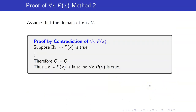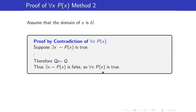Sometimes we use proof by contradiction to show that 'for all x, P(x)' is true. When we want to prove 'for all x, P(x)' by contradiction, we suppose that its negation is true. The negation is: there exists an x such that not P(x) is true. We then want to obtain a contradiction — some statement q and not q. Once we have found a contradiction, that means our initial assumption is false, and so 'for all x, P(x)' is true.